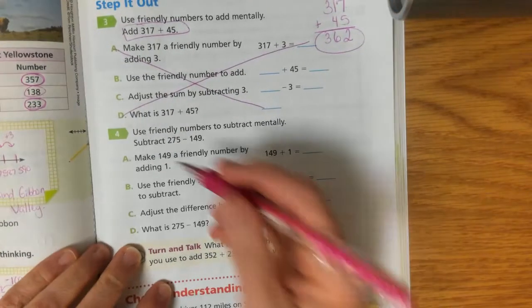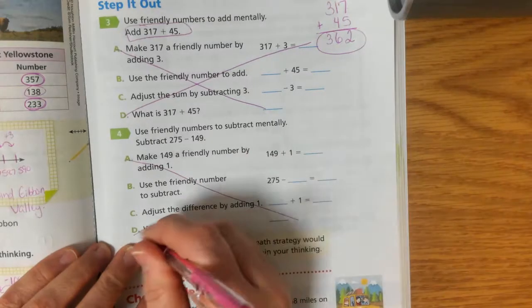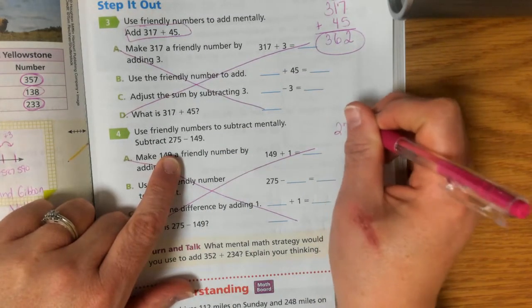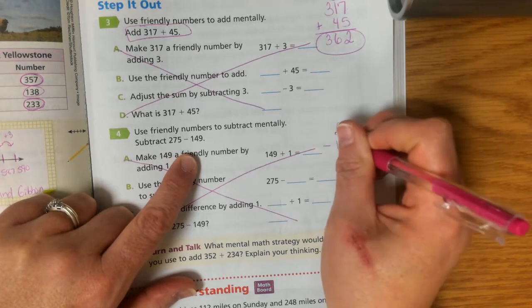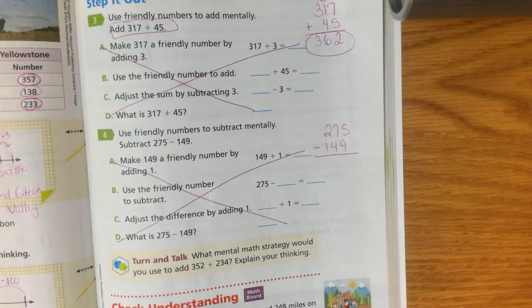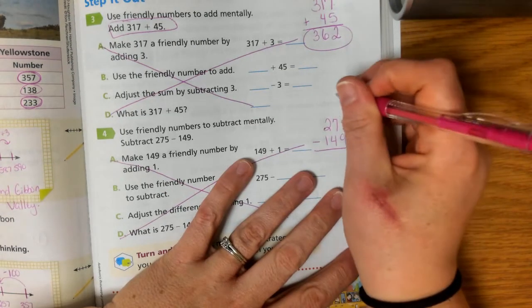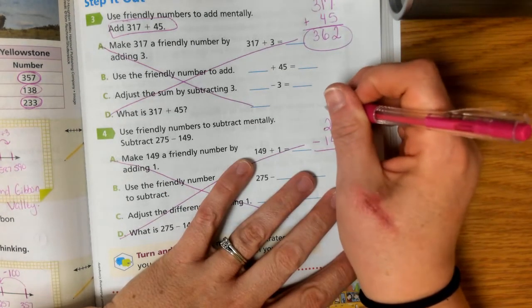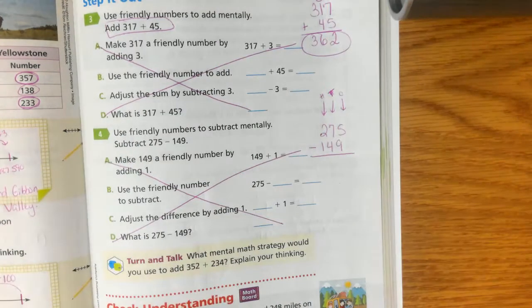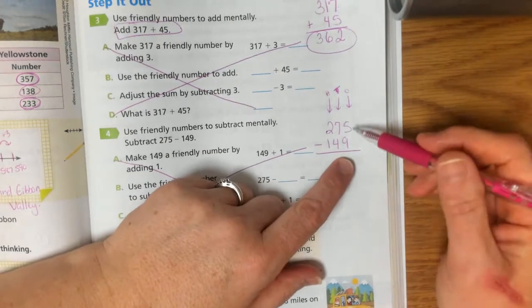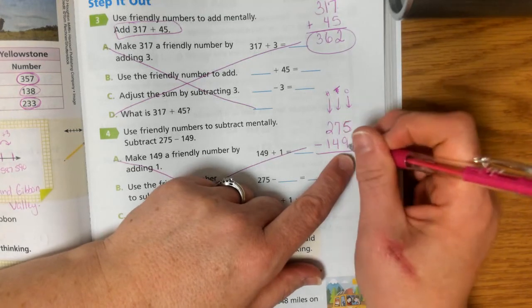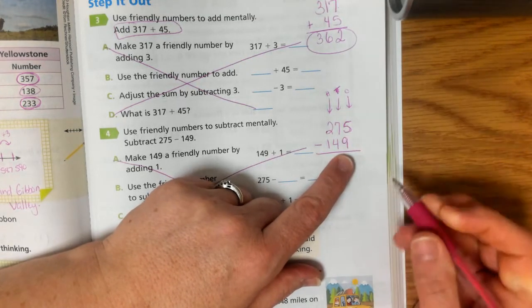And we're going to do the same thing with the subtraction. We're not going to make these friendly numbers. We are going to subtract 275 minus 149. And again, we always start in our ones place. Then we move to our 100s, then our, or I mean our 10s, sorry, then our 100s. We always get bigger. So one thing we need to remember when we subtract, if the number on top is smaller than the number on bottom, then we have to regroup.